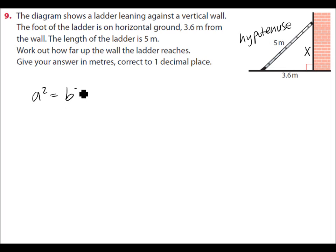So we'll write down Pythagoras' Theorem. A squared equals b squared plus c squared. So the long side, 5 squared, is equal to the other two sides squared added together. X squared plus 3.6 squared.